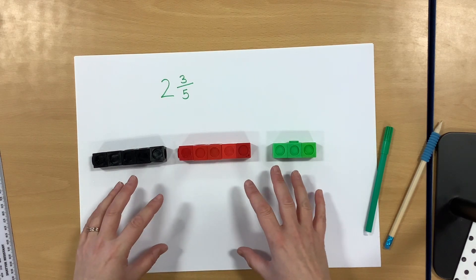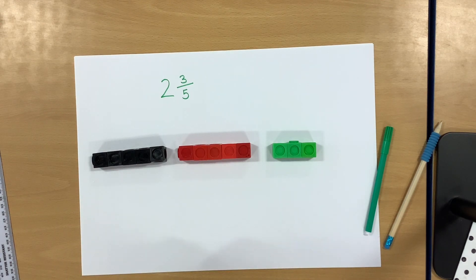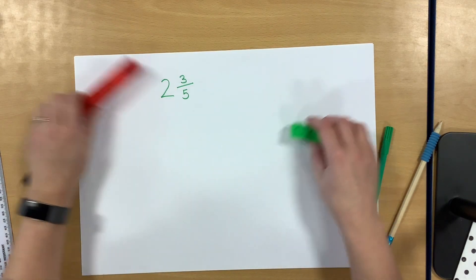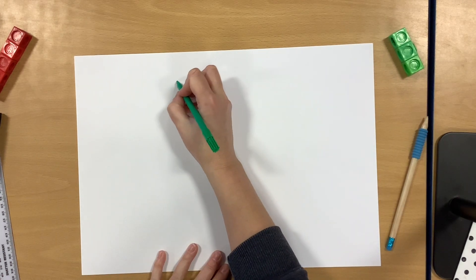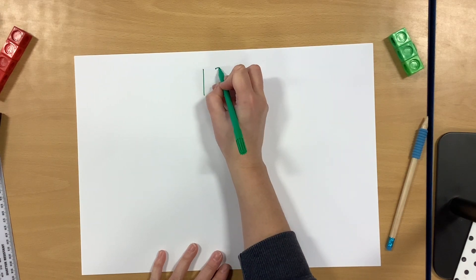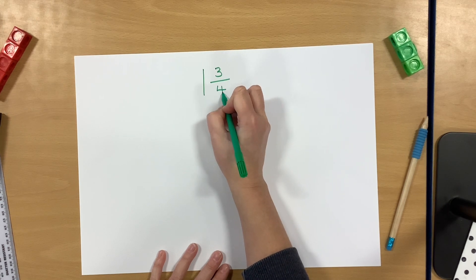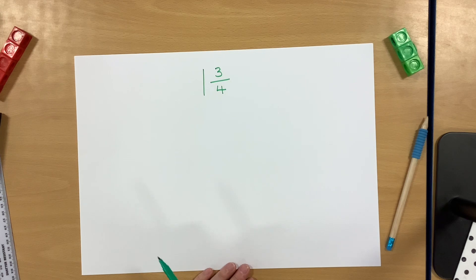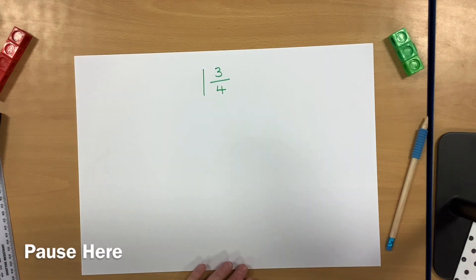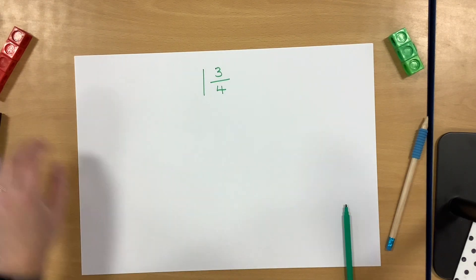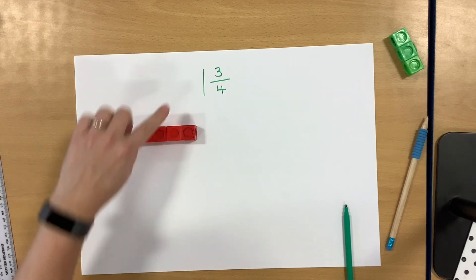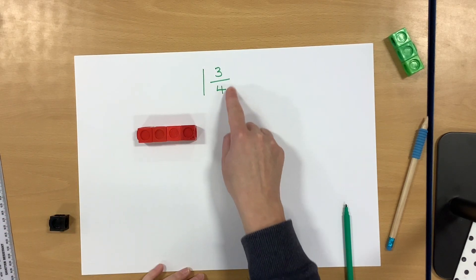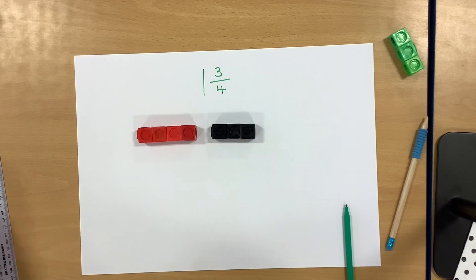I'm going to put a fraction on screen and I would like you to pause. Have a go at building it with multilink and drawing it, and then unpause to see if it looks like mine. The fraction I would like you to draw and build is one and three quarters. Remember, the denominator is four. My denominator is four, so I need four blocks in each whole one. I've only got one whole one, and then the second lot I'm only going to want three of the four. So you should have built something that looked a little bit like that.